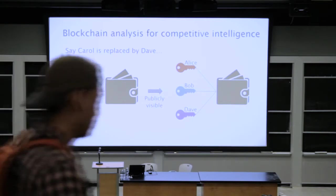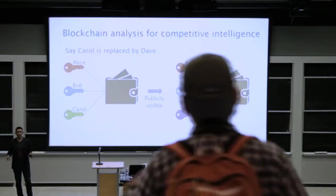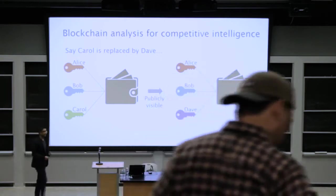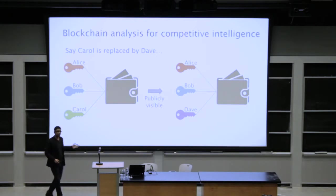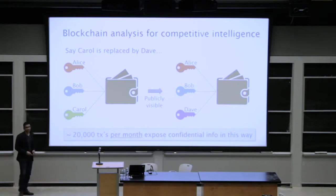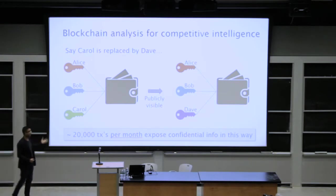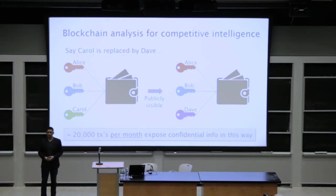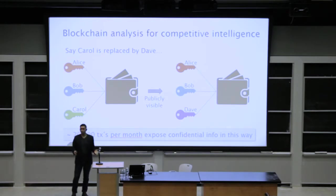Any competitor of this company using blockchain analysis would be able to look at this and figure out that something interesting happened — some sort of rearrangement, a shuffling of wallet access and control structure. We looked at this using blockchain analysis, and it turns out that on average there are 20,000 transactions per month that expose confidential internal company information on the public blockchain, because of this inevitable property of multisig: whenever you change the set of keys associated with a wallet, you have to essentially broadcast it on the blockchain. This is an example of using blockchain analysis for competitive intelligence.